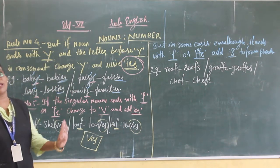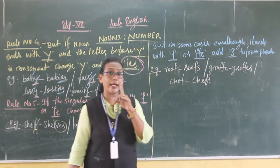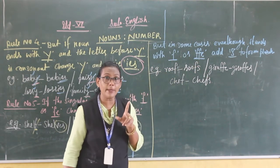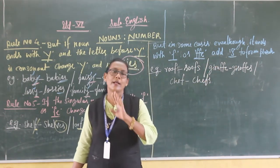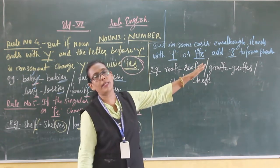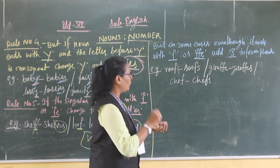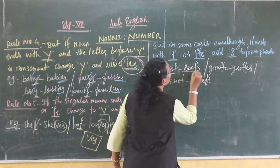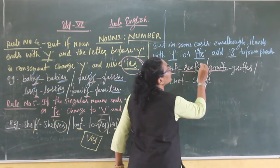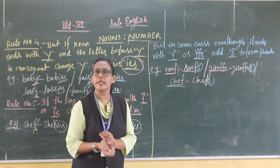Rule number five: if a singular noun ends with F or FE, change F or FE to V and add ES — so you write VES. For example, SHELF ends with F — drop F, write VES: SHELVES. LOAF becomes LOAVES, and LEAF becomes LEAVES. However, in some cases, even if the word ends with F or FF, you just add S without changing anything.